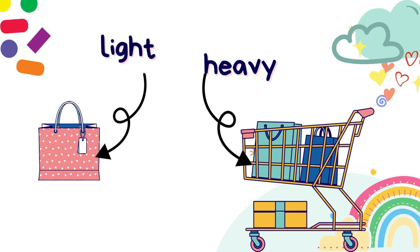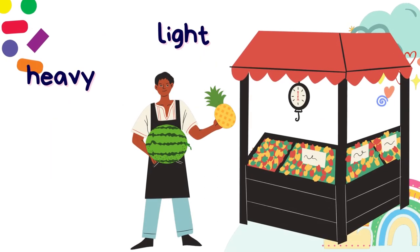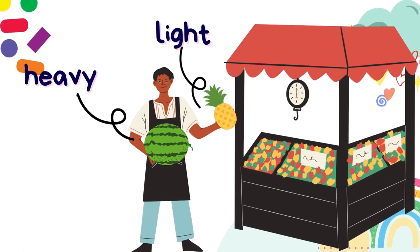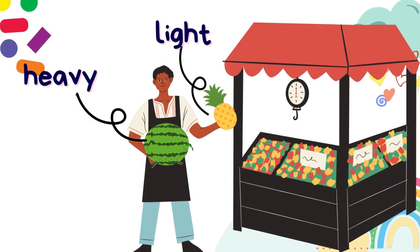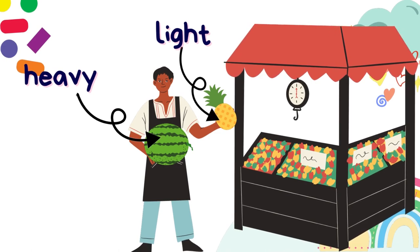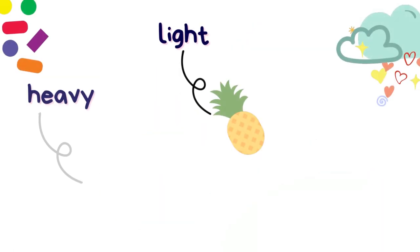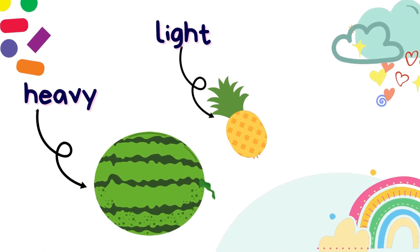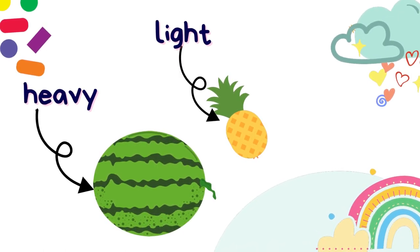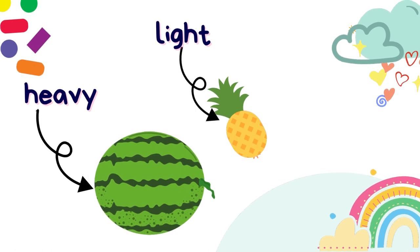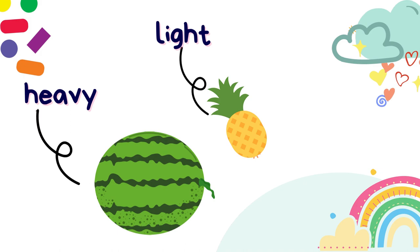Good job. Now look at the seller. The seller is holding a pineapple and a watermelon. The pineapple is light and the watermelon is heavy. Say with me: light, heavy. One more time: light, heavy. Good job.